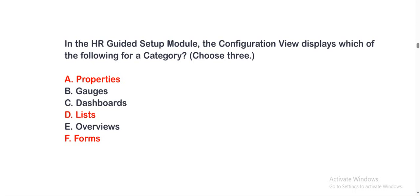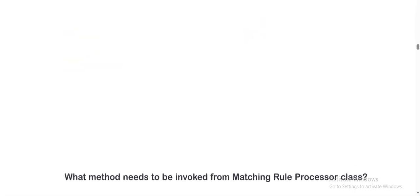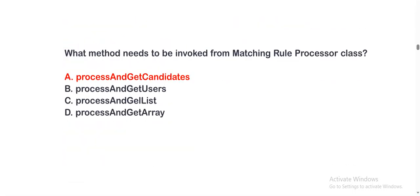Next question: What method needs to be invoked from the matching rule processor class? The options are: option A, process and get candidates; option B, process and get users; option C, process and get list; and option D, process and get array. The correct option is option A.